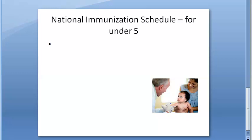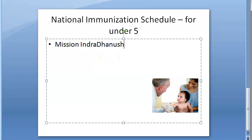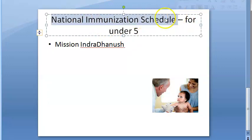In this video, let us look at the national immunization schedule for under-five children. The national immunization schedule for infants, children, and pregnant women is a component of the Universal Immunization Program of India. The Universal Immunization Program has been rechristened as Mission Indra Dhanush since December 2014.